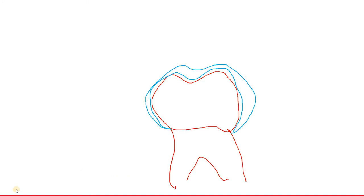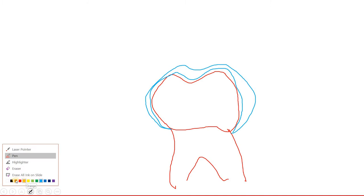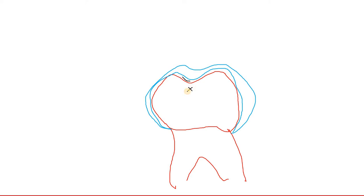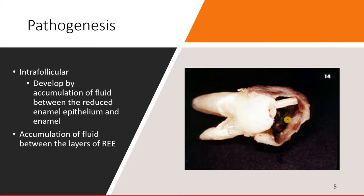In this particular cyst, you can have two types of fluid accumulation. You can have fluid accumulation between the crown and both layers of epithelium, or you can have fluid accumulation within the inner enamel epithelium and the outer enamel epithelium. The more common type of accumulation is between the crown of the tooth and the epithelium, and that is called the intrafollicular type of cyst formation.